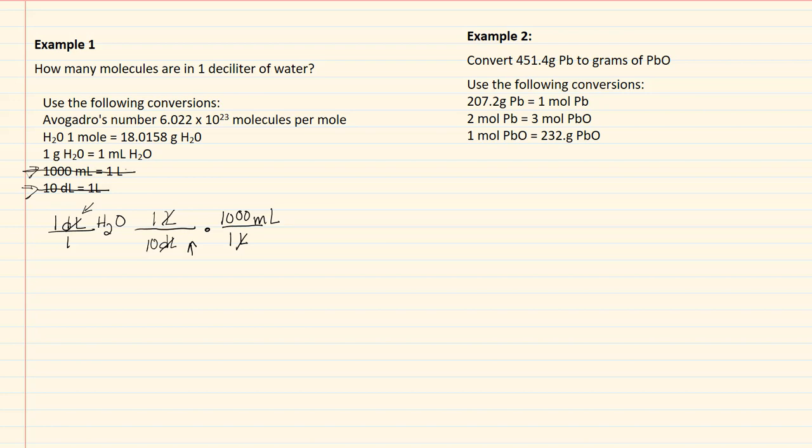Now I have milliliters, and my next conversion that has milliliters is this one here. So since I have milliliters on top, I'm going to put my milliliters down below. And my other part of my conversion is the grams, so I have one gram of H2O.